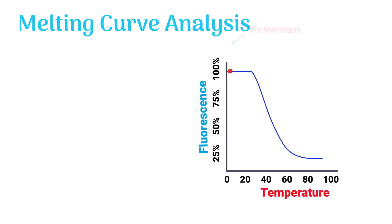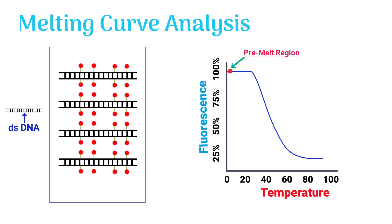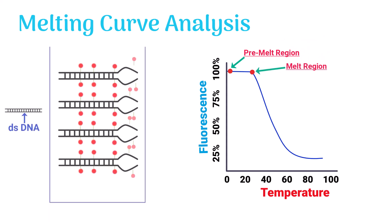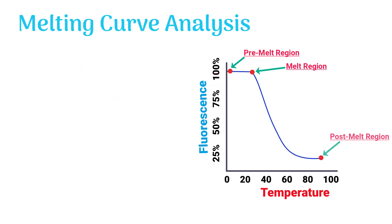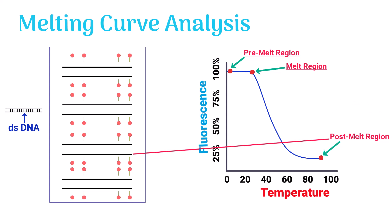The pre-melt region refers to a point where the DNA was in its double-stranded form. The melt region indicates a point where the DNA began to melt. The post-melt region represents a point where the DNA strands were completely melted.